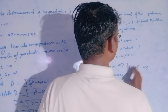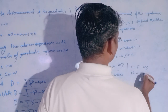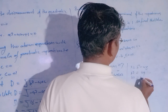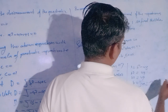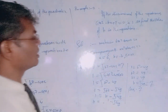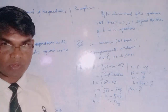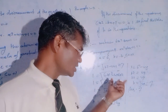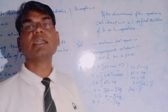B squared is equal to 49. Therefore, B is equal to under root 49, which equals 7. So the value of B is 7. After transposing and removing the roots, we can find the answer to the given question. The value of B is 7.